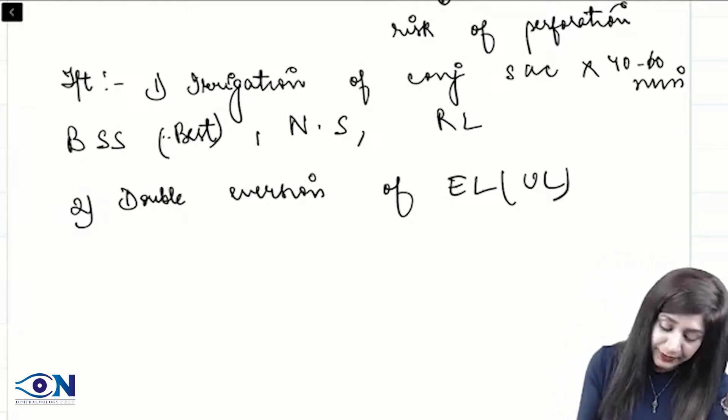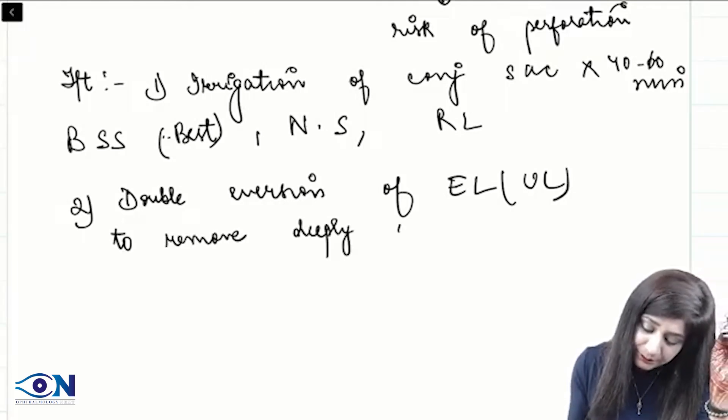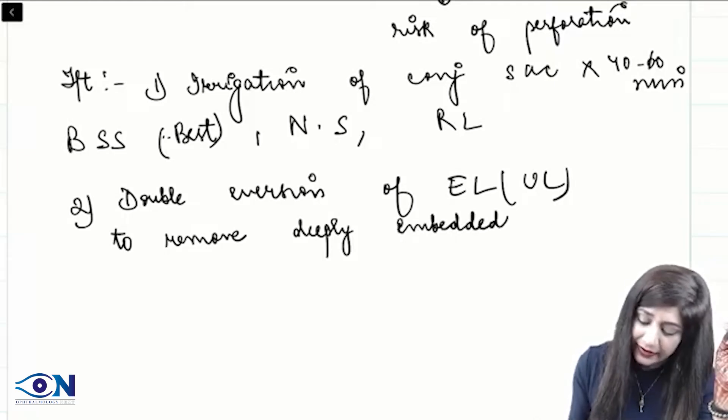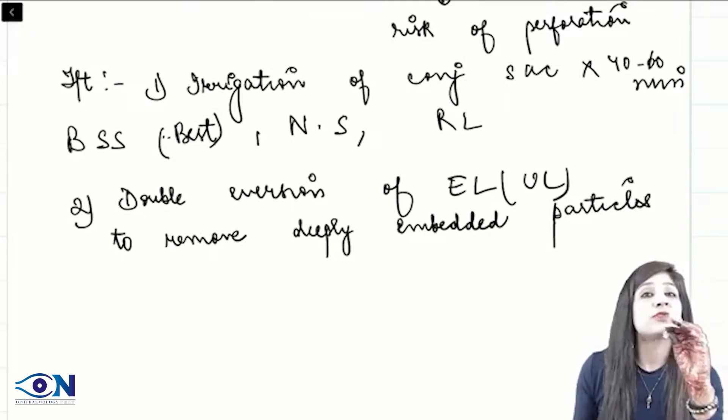Once you have everted, you have to remove the deeply embedded particles. That is very important because these particles are deeply embedded and going into the fornix area. It has to be removed at the earliest.